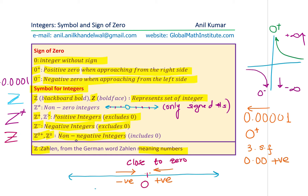So bold Z with zero-plus or bold Z with greater-than-or-equal-to means non-negative integers, which include zero. These are the signs for integers under different circumstances: Z with superscripts and subscripts that sometimes include only negative integers, only positive integers, or zero and positive integers — non-negative integers — or all integers except zero.